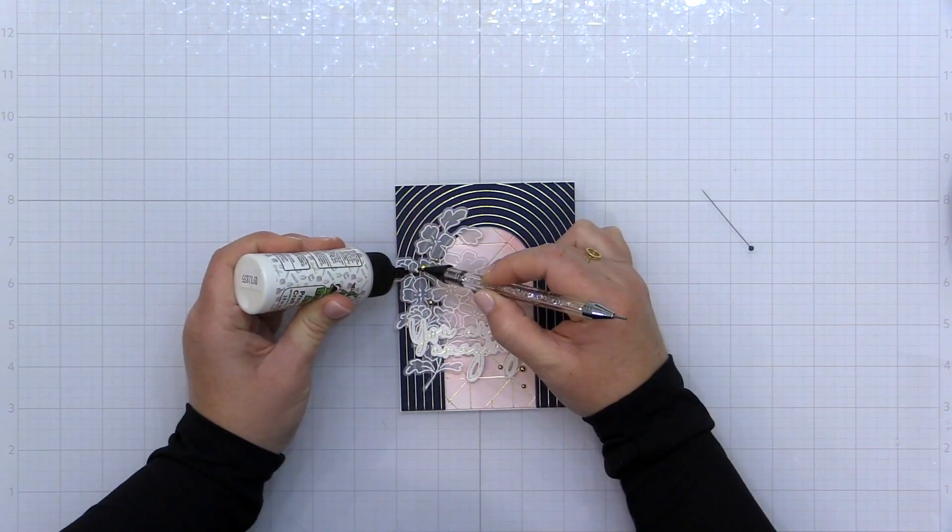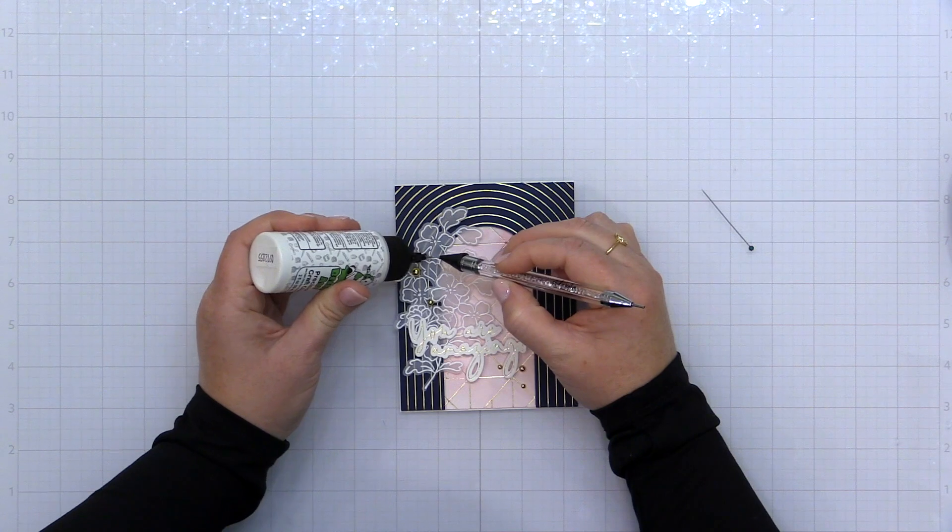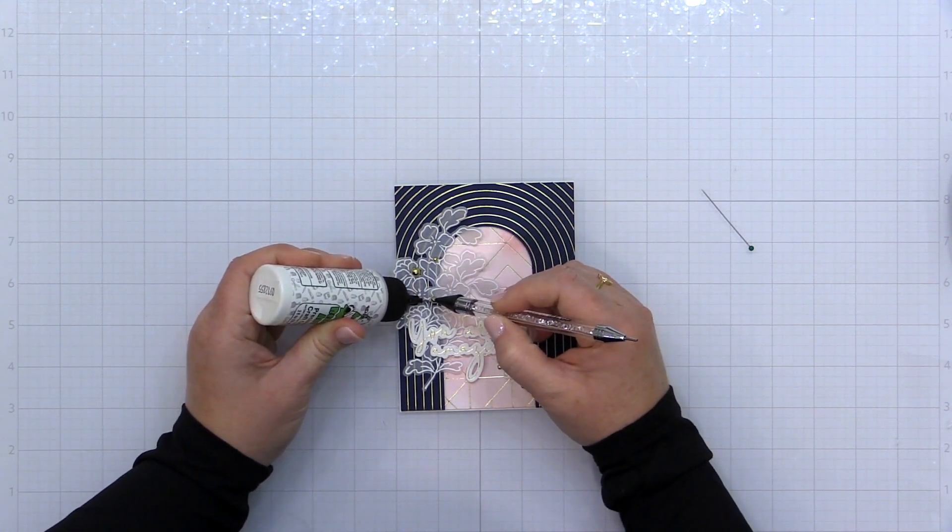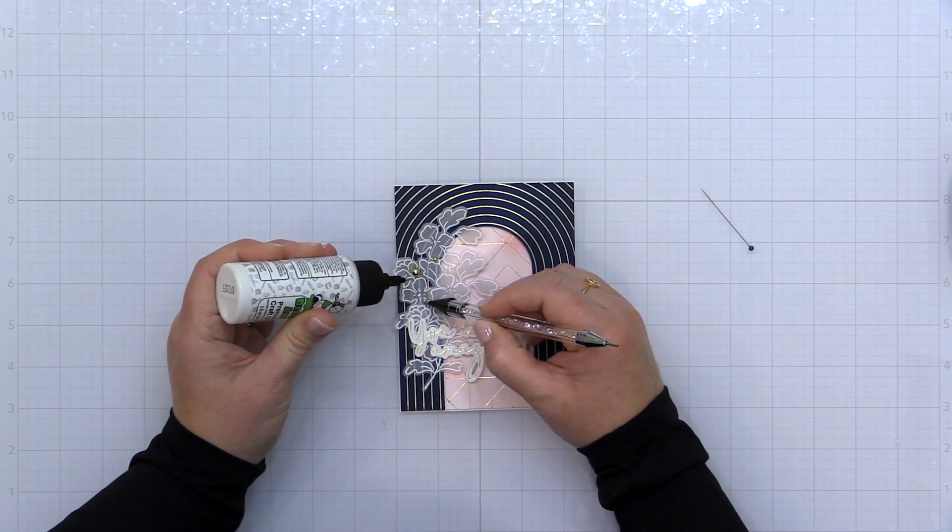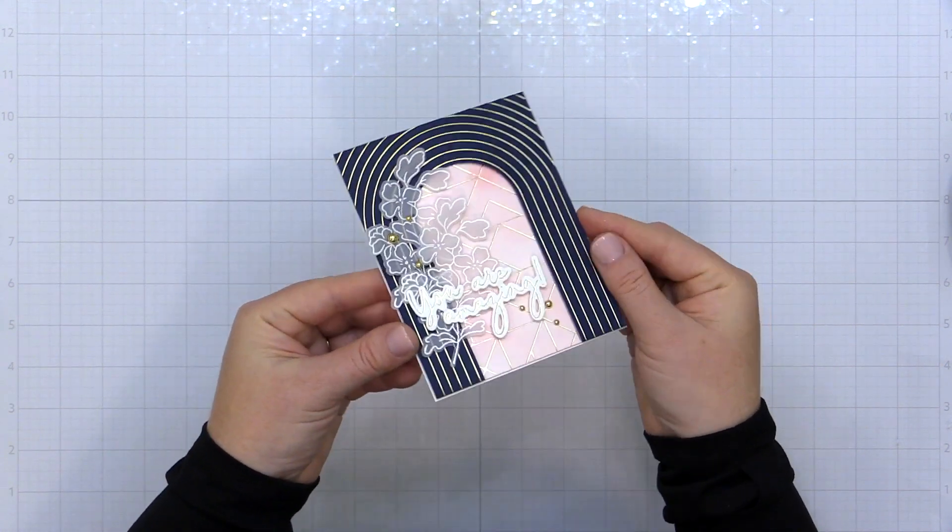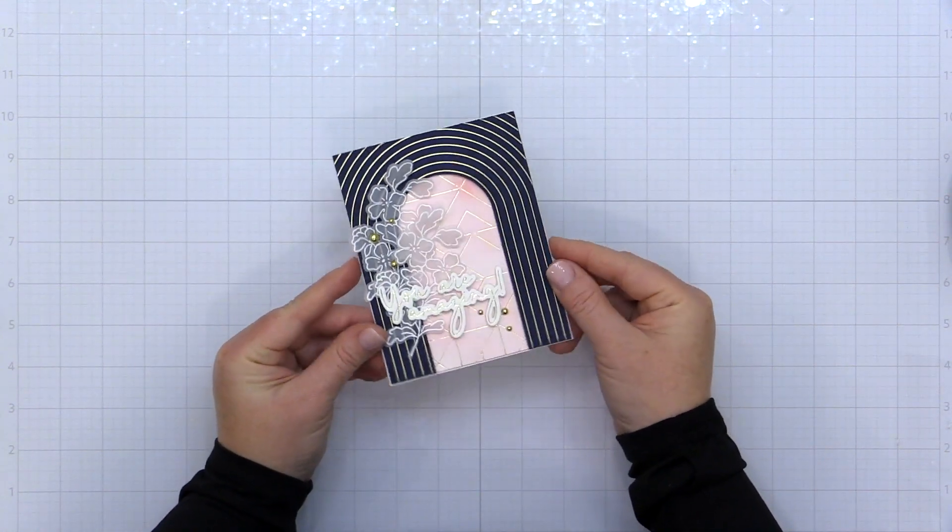Now to finish this card off, I'm just going to add some of the metallic gold pearls from Pinkfresh Studio. I'm using a little jewel picker or a jewel tool—I like that better—and I use that and a little liquid adhesive to adhere these down onto my finished card project.